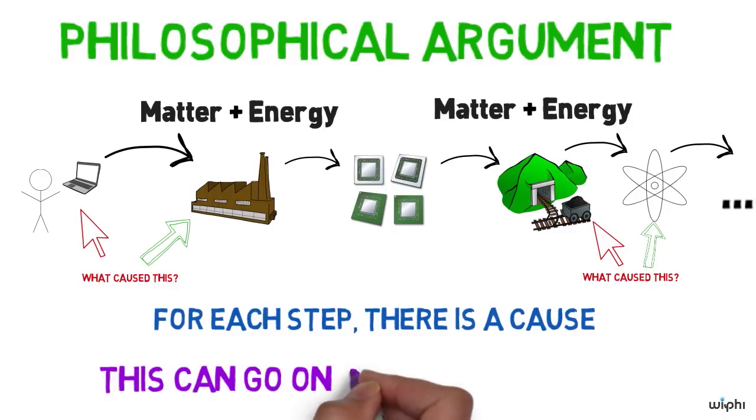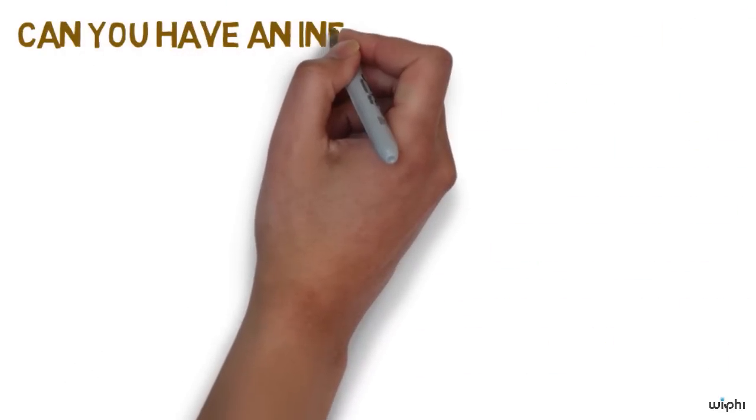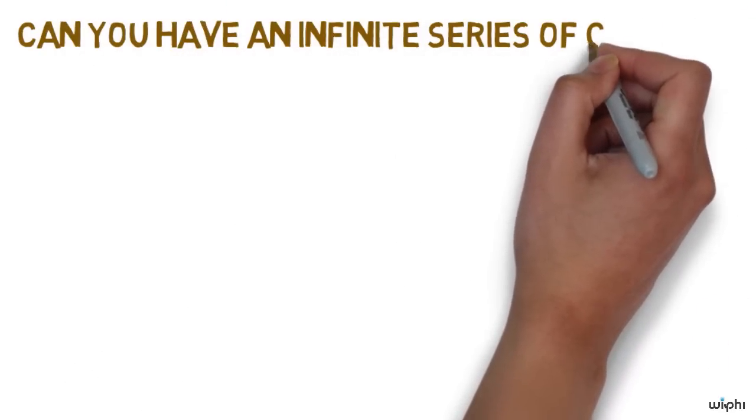In theory, this kind of explanation could go on forever. Or could it? Does it make sense to talk about an infinite series of causes?